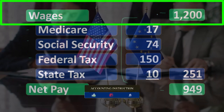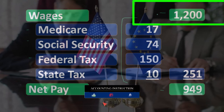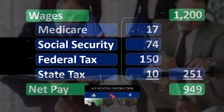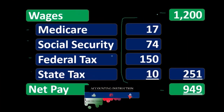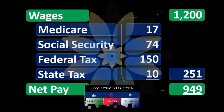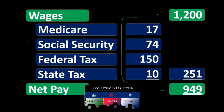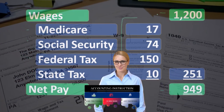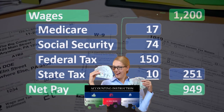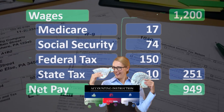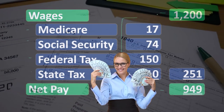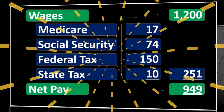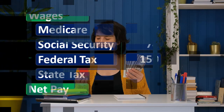Now, there could be other deductions as well. Some deductions are going to be required by the government to withhold, such as the taxes. Some could be benefits, such as health insurance payments or payments to a 401k plan or some type of retirement plan, which might also be taken out in order to determine net pay, depending on the circumstances.